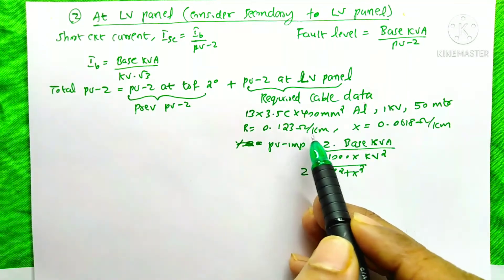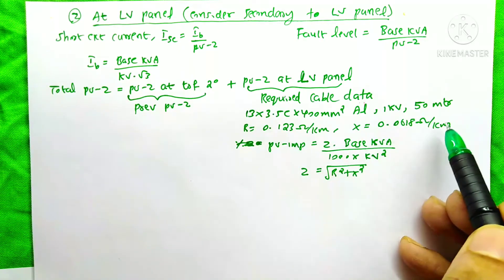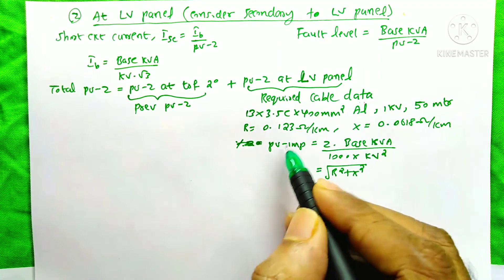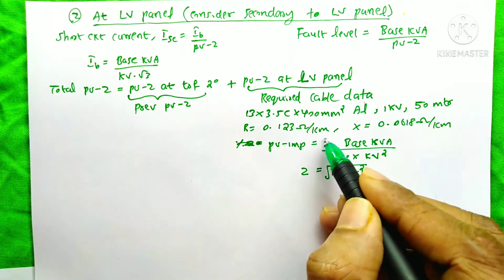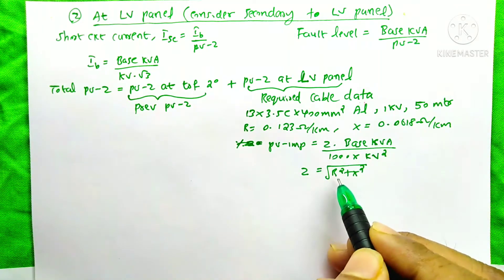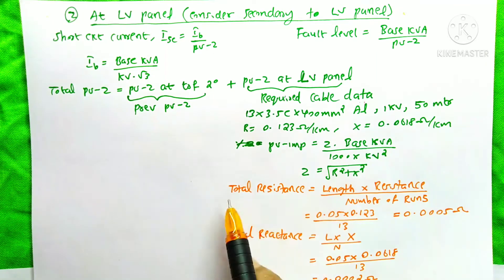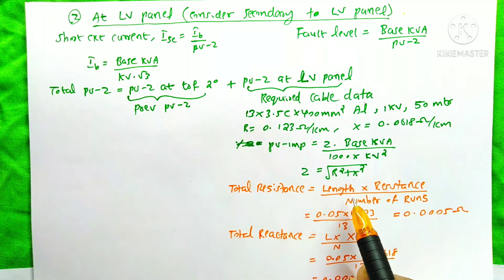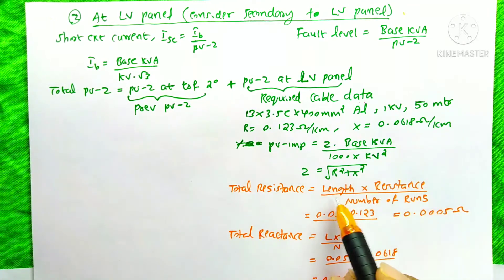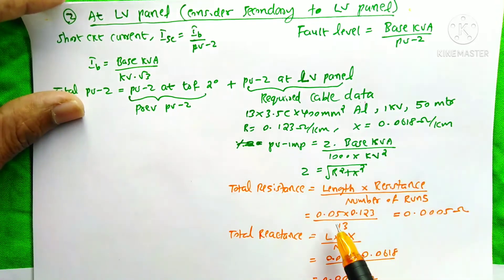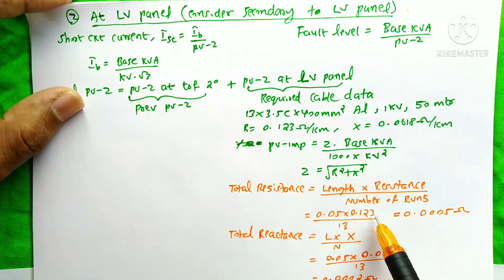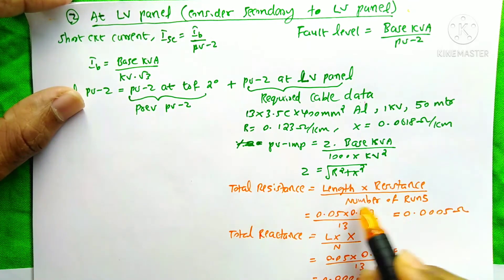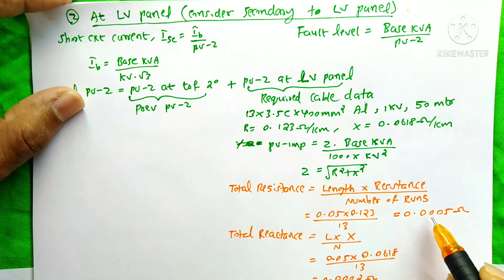The per unit impedance at the LV panel equation is Z into base kVA divided by 1000 into kV squared. First we find Z, the cable impedance, using root of R squared plus X squared. The total resistance equals length of cable multiplied by resistance of cable divided by number of runs: 0.05 km into 0.123 Ohm/km divided by 13, which gives 0.0005 Ohms.